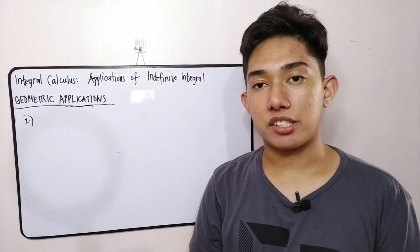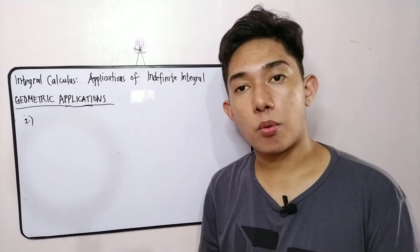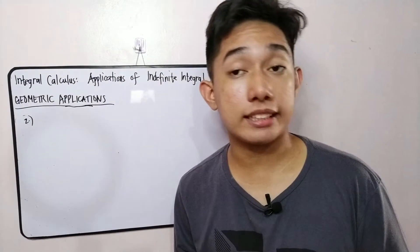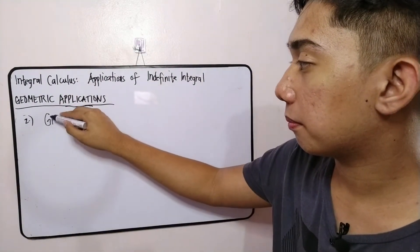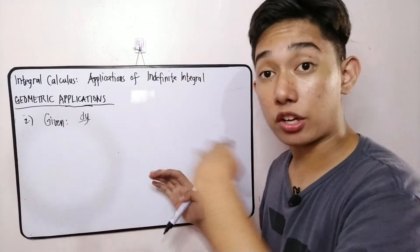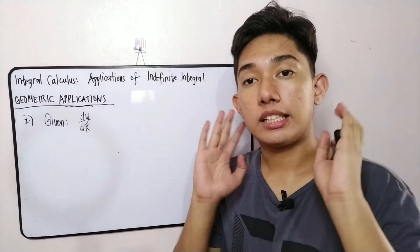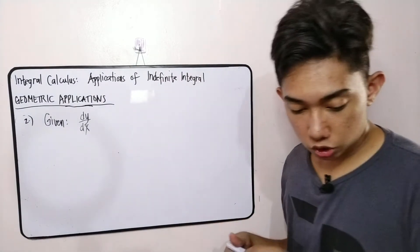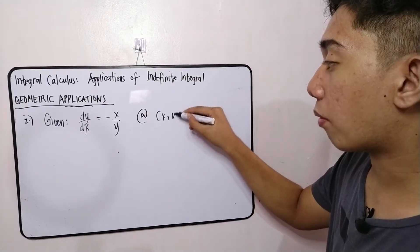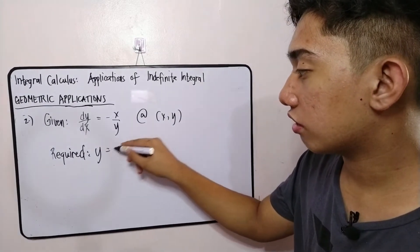For the second problem, we will find a function — or the curve — whose slope at point (x, y) is equal to negative x over y. Recall from differential calculus that dy/dx represents the slope of a tangent line to a curve. So dy over dx equals negative x over y. The curve passes through the point (0, a), and we are asked to find y as a function of x.